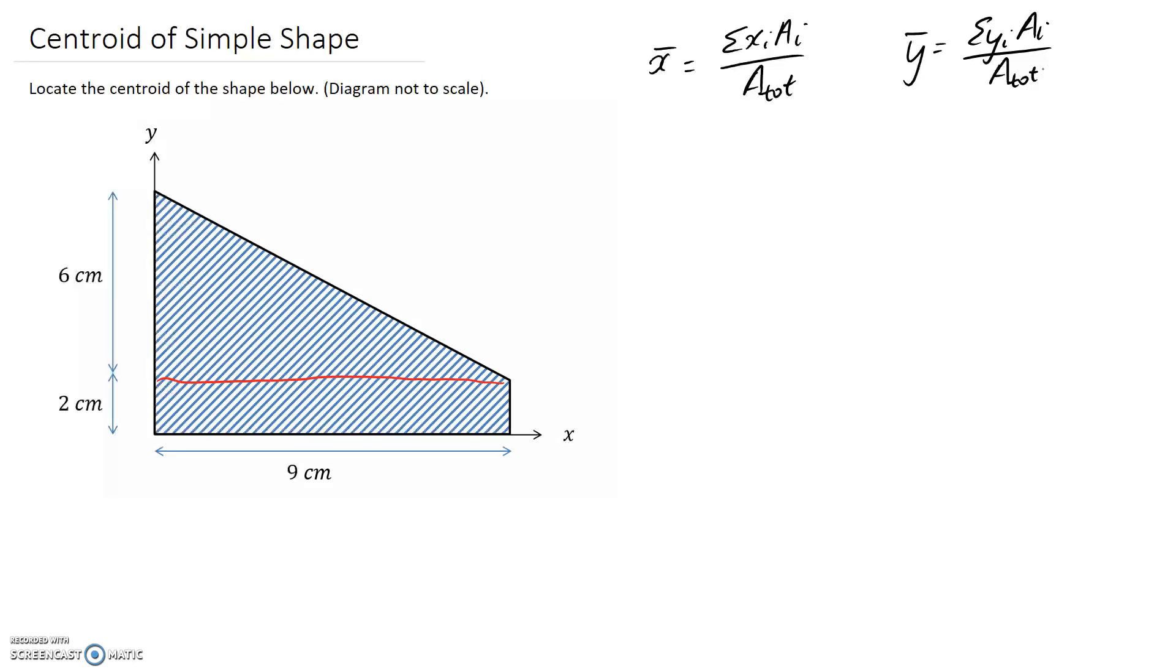The first thing I'm going to look for is the xi and the yi. These are the centroids of the individual parts that make up the bigger shape. We've got two different shapes, which means we're going to have two different centroids that we need to find.